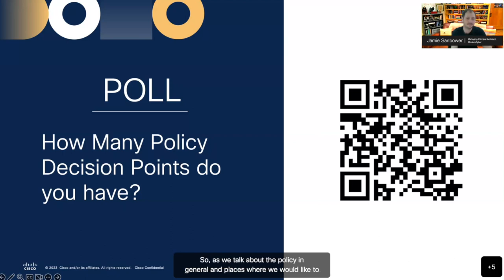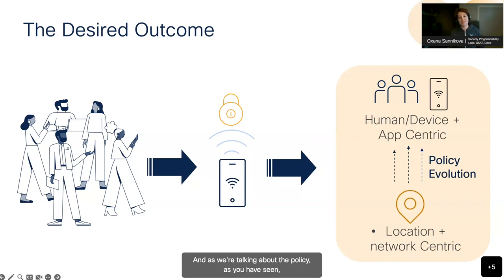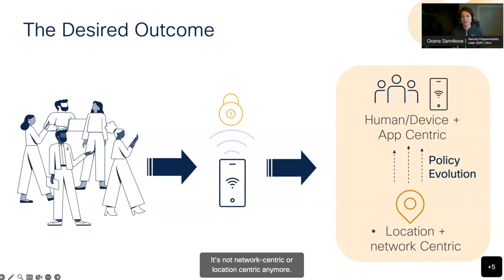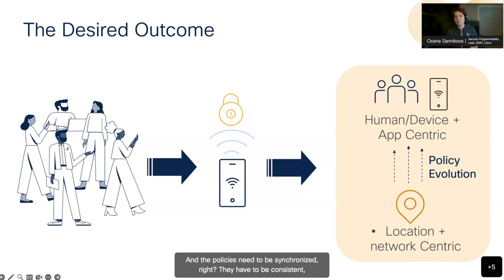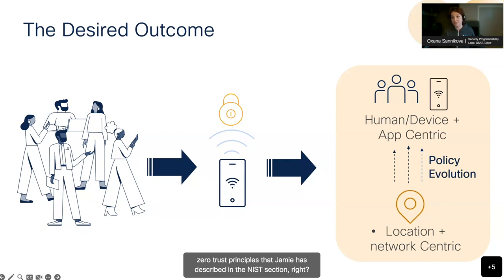As we talk about policy in general and places where we'd like to automate, the first thing we need to think about is the desired outcomes. The policy is evolving — it's not network-centric or location-centric anymore; it is very much user-centric and application-centric. Policies need to be synchronized, consistent, and dynamic. We need visibility and control capabilities to make sure we fully implement zero trust principles. We're all living in a hybrid cloud world — our users can be everywhere, and same with our applications. The main struggle is to maintain consistency and get that level of visibility across all of our infrastructure.